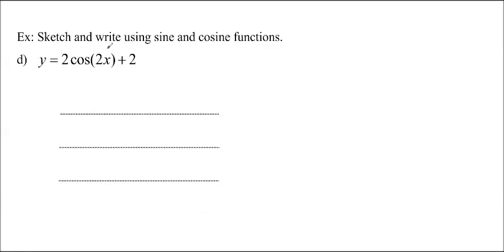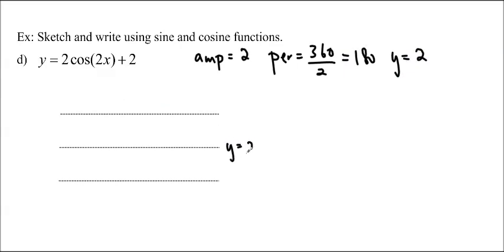Last one. So sketch and write using sine and cosine functions. So again, we're going to do the same thing. 2 cos 2x plus 2. So my amplitude is equal to 2. My period is equal to 360 over 2, which is 180. And my axis, y equals 2. So again, we're just putting the axis in, finding the amplitude. So this is 0. So I know where my x-axis is. I will draw that right in like that and write x.